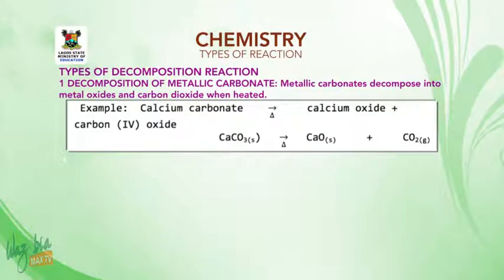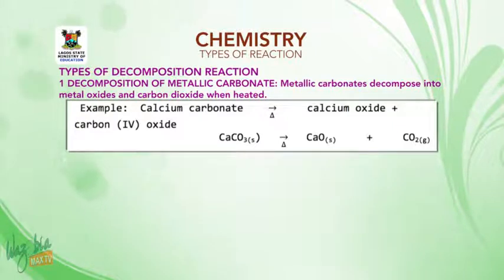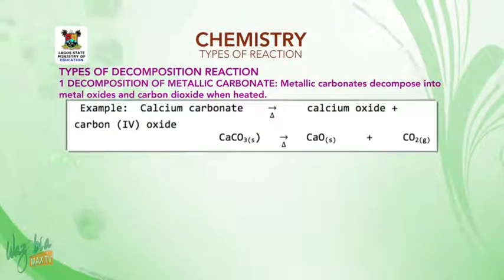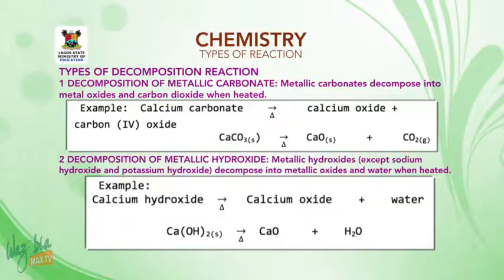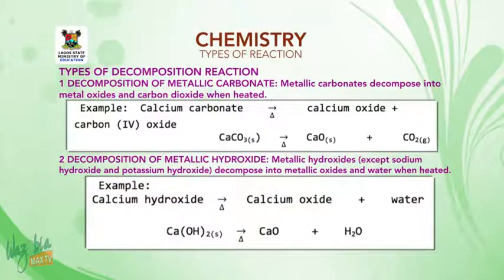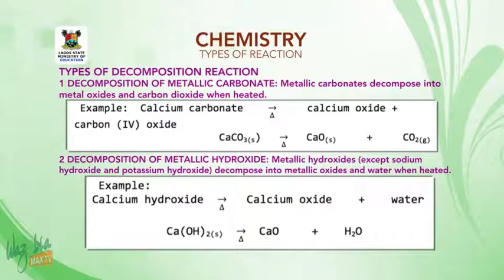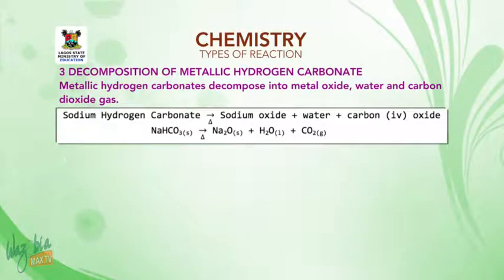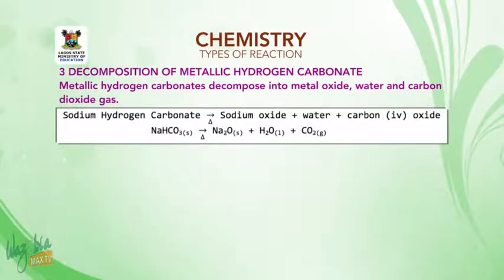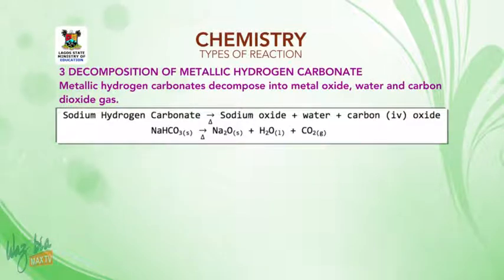Types of decomposition reaction. Number one: decomposition of metallic carbonate — metallic carbonates decompose into metal oxide and carbon dioxide when heated. For example, calcium carbonate → calcium oxide + CO₂. Number two: decomposition of metallic hydroxide — metallic hydroxides, except sodium hydroxide and potassium hydroxide, decompose into metallic oxide and water when heated. For example, calcium hydroxide → calcium oxide + water. Number three: decomposition of metallic hydrogen carbonate — these decompose into metal oxide, water, and carbon dioxide. For example, sodium hydrogen carbonate → sodium oxide + water + CO₂.